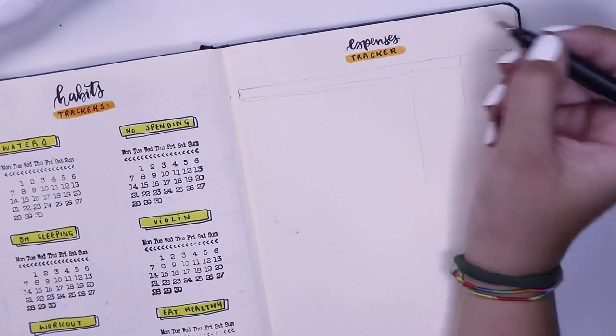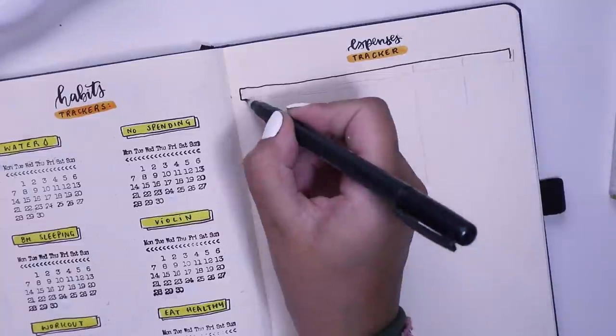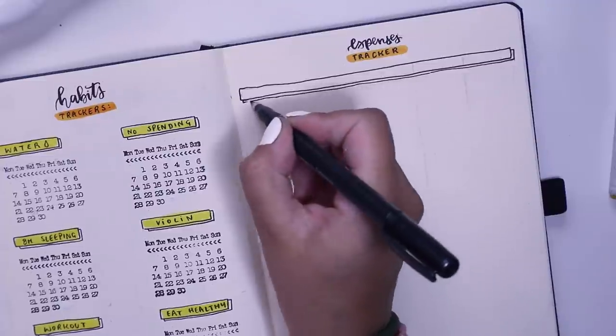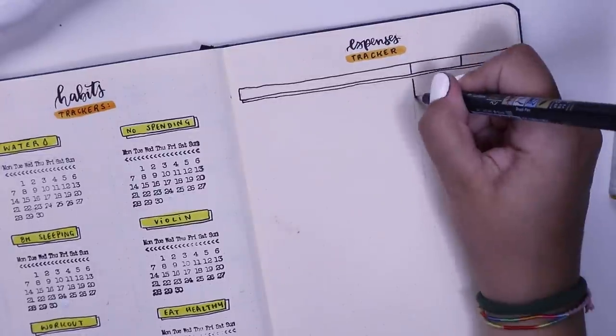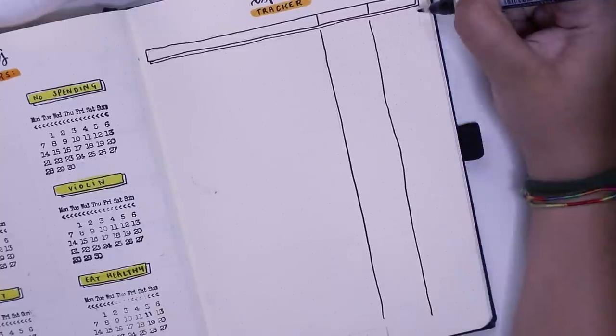I always do the same sort of layout for this chart. That includes a bar at the top where I write the title - my description, the money that comes in and the money that comes out. Then I do three columns, one for the description and one for the money that comes in and the money that comes out.